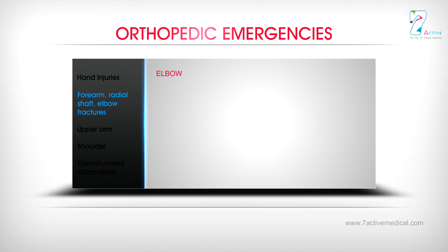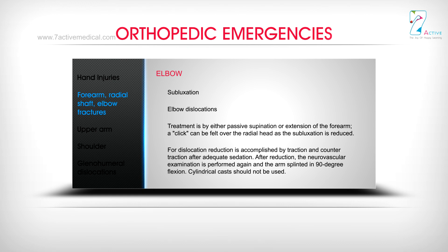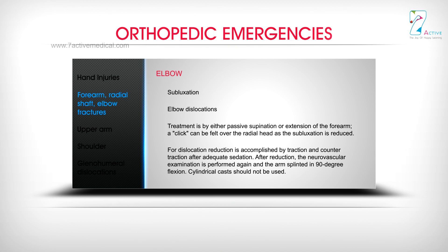Elbow: Subluxation treatment is by either passive supination or extension of the forearm; a click can be felt over the radial head as the subluxation is reduced. For dislocation, reduction is accomplished by traction and counter-traction after adequate sedation. After reduction, the neurovascular examination is performed again and the arm splinted in 90-degree flexion. A cylindrical cast should not be used.